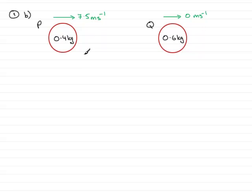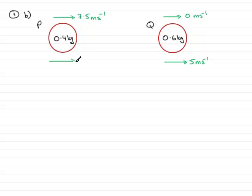Now in Part B, P is moving at 7.5 meters per second after the impulse and it's heading towards the stationary Q. P bumps into Q, and after that collision we're told that Q moves off with a velocity of 5 meters per second in that direction. We've got to find the final velocity of P, which I'm going to label Vp. To do this, we use the conservation of linear momentum.